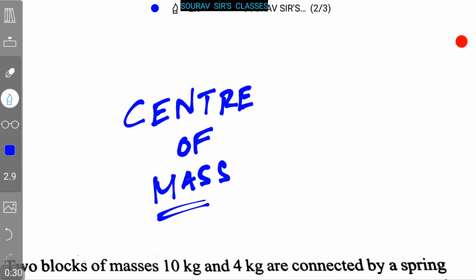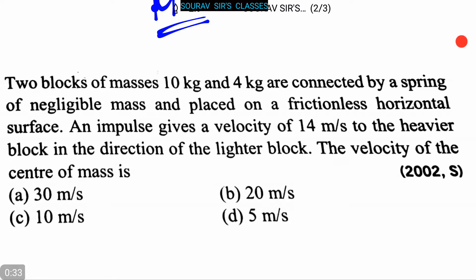Today we are discussing some questions on center of mass. Here is our first question: Two blocks of masses 10 kg and 4 kg are connected by a spring of negligible mass and placed on a frictionless horizontal surface. An impulse gives a velocity of 14 meter per second to the heavier block in the direction of the lighter block.